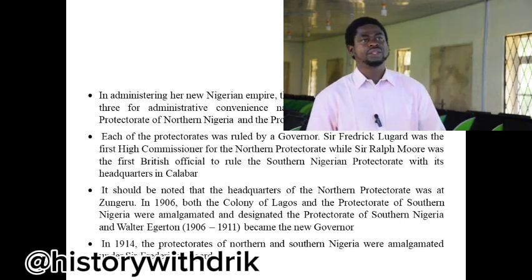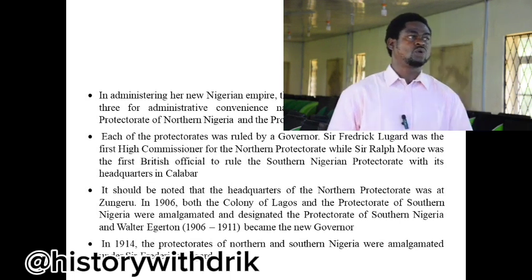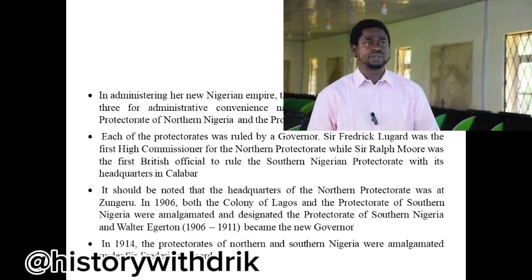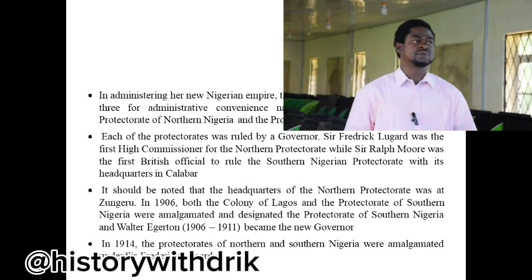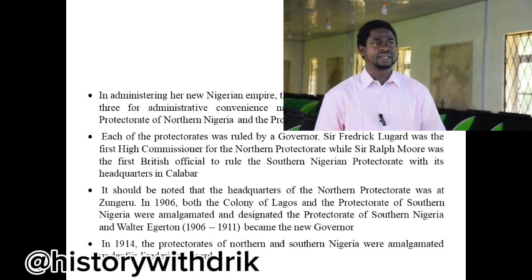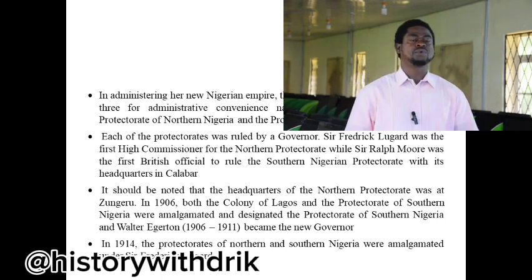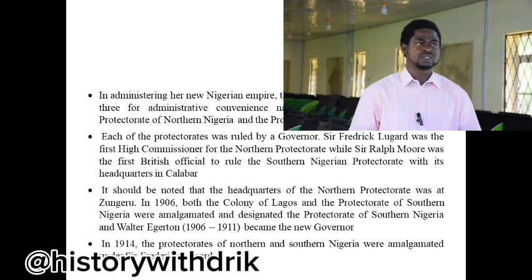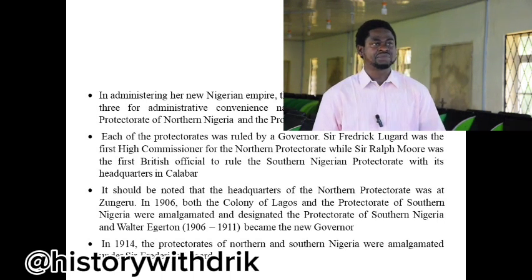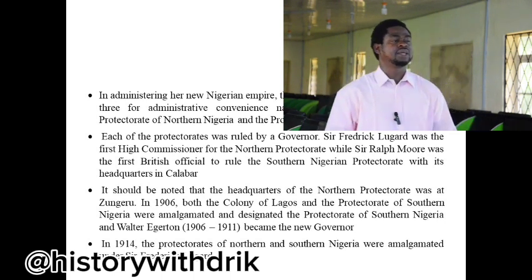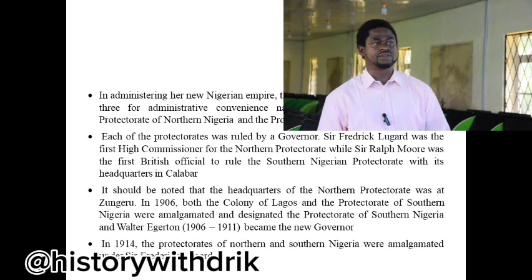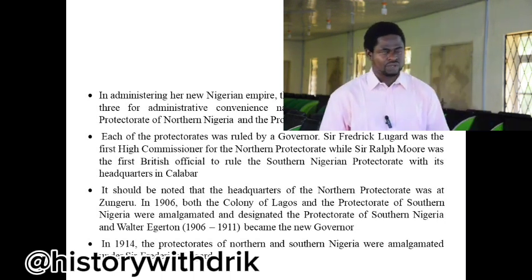The headquarters of the Northern Protectorate was at Zungeru. In 1906, both the colony of Lagos and the Protectorate of Southern Nigeria were amalgamated and designated the Protectorate of Southern Nigeria. Walter Egerton, who served between 1906 and 1911, became the new governor. In 1914, the Protectorates of Northern and Southern Nigeria were amalgamated under Sir Frederick Lugard.